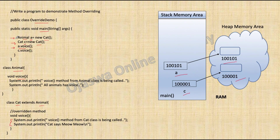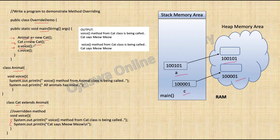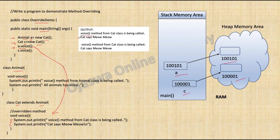You may have a question: which voice method is invoked at runtime? The method belonging to the object type is invoked. In our case, we have a Cat object assigned, so the method belonging to Cat class is invoked. When this statement is executed, control of the program goes to the voice method belonging to Cat class and the code inside Cat class is executed — System.out.println voice method from Cat class is being called. This is printed to the console, and cats say mu mu. A backslash n adds a new line to the console.